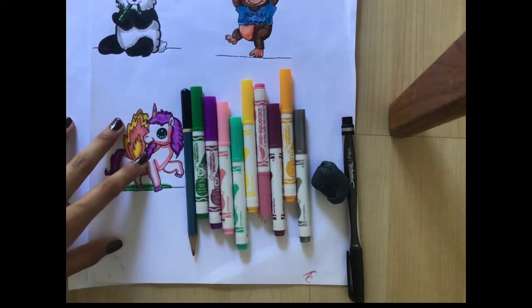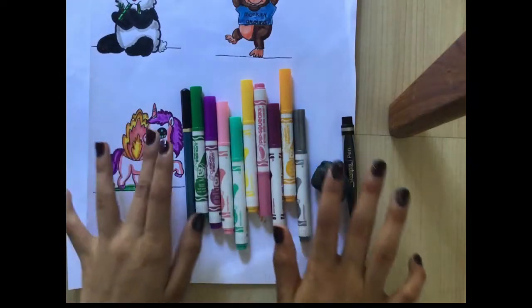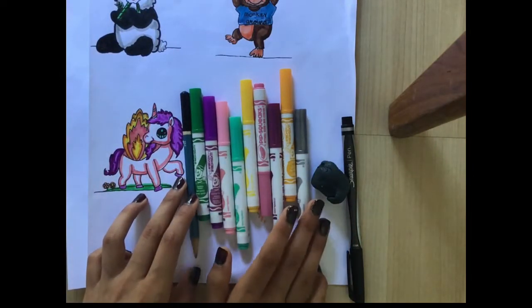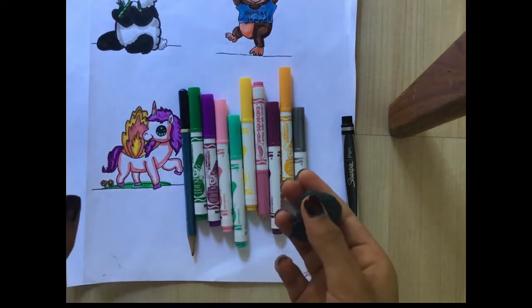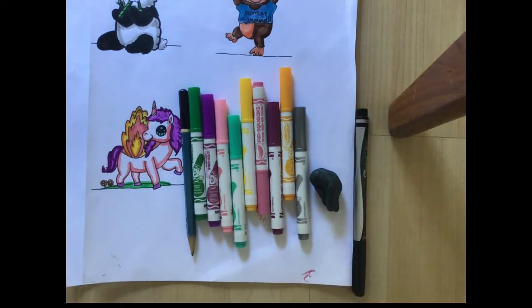So today we are going to draw this cute unicorn. It's actually really simple to draw and you only need these: an HB pencil, some Crayola Pipsqueak markers, a kneaded eraser (a normal eraser works fine, I just prefer the kneaded eraser), and a Sharpie pen.